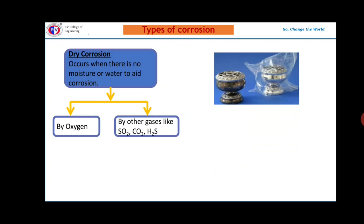Now let us understand the types of corrosion. Dry corrosion. This type of corrosion occurs when there is no contact of moisture or water for the corrosion to occur. It may be by oxygen or it may be by gases like sulphur dioxide, carbon dioxide or hydrogen sulphide. The first one, corrosion by oxygen. It is also called oxidative corrosion. This type of corrosion occurs when direct attack of oxygen on the surface of metal without the help of moisture or water.